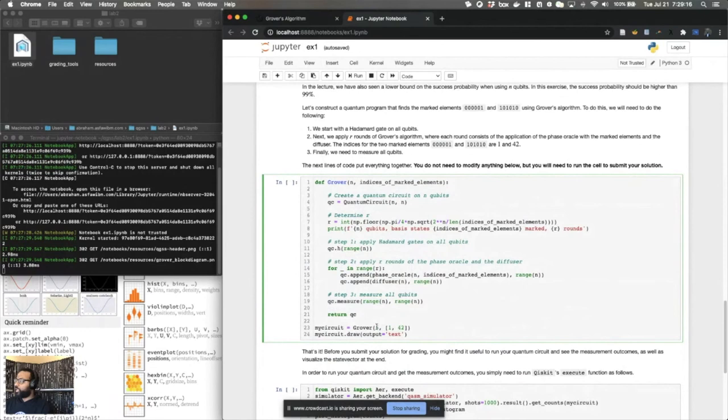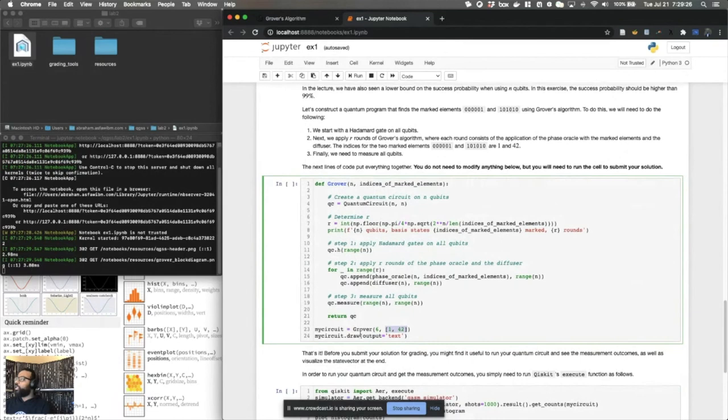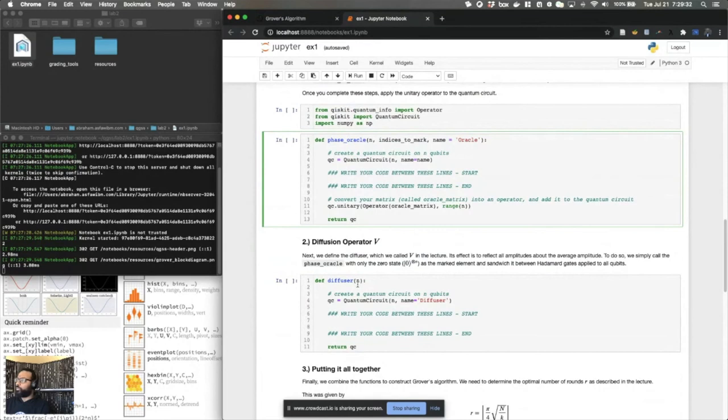Now you take these marked states and you use them to create effectively a Grover algorithm circuit that takes six qubits and has the marked indices that are one and 42. So you don't need to change any part of this particular cell. However, you do need to fill out these components, the diffuser and the phase Oracle. And once you're done,